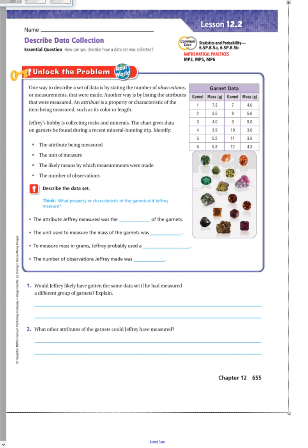Jeffrey's hobby is collecting rocks and minerals. The chart gives data on garnets he found during a recent mineral hunting trip. So identify, we need to identify the attribute being measured, the unit of measure, the likely means by which measurements were made, and the number of observations. So describe the data.